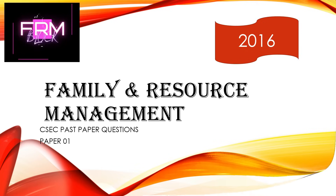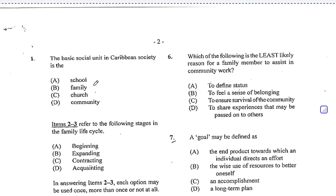Let's begin with number 1. The basic social unit in Caribbean society is A. School, B. Family, C. Church, D. Community. Which of these is the answer? Now remember that the social units of the society are the school, the family, and the church. These are the various social units responsible for socialization of children. But the basic social unit is B, the family.